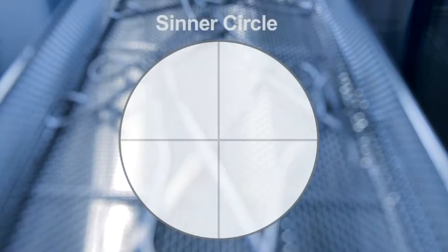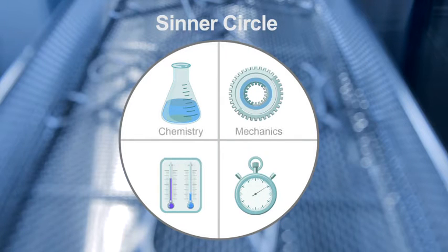According to the Sinner circle, there are four main factors. Chemical and mechanical action, as well as process time and temperature, have to be carefully coordinated.